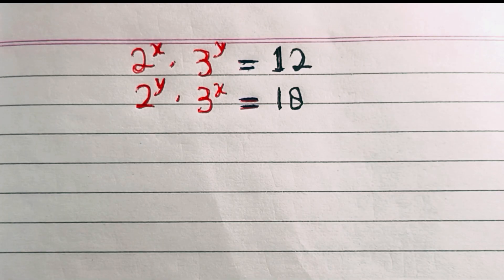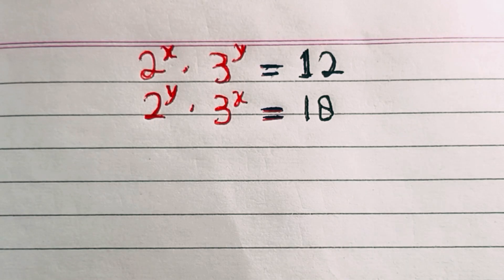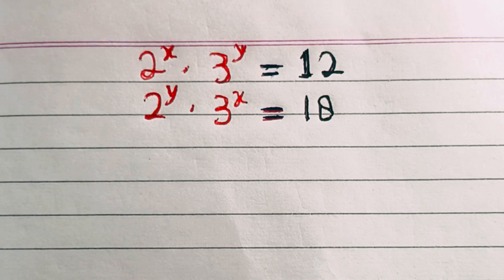Hello and welcome to Think and Drive. Here we have two exponential equations: 2^x times 3^y equal to 12, and 2^y times 3^x equal to 18. Let's see how to solve this problem.